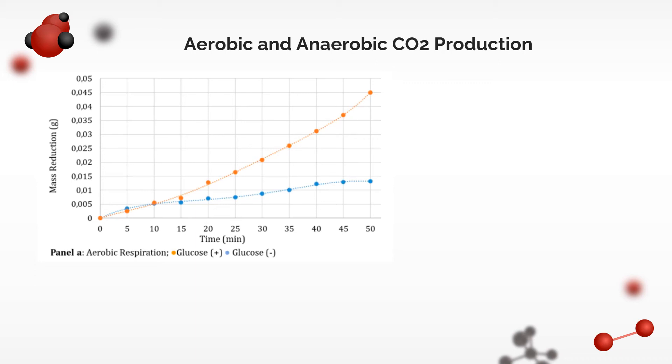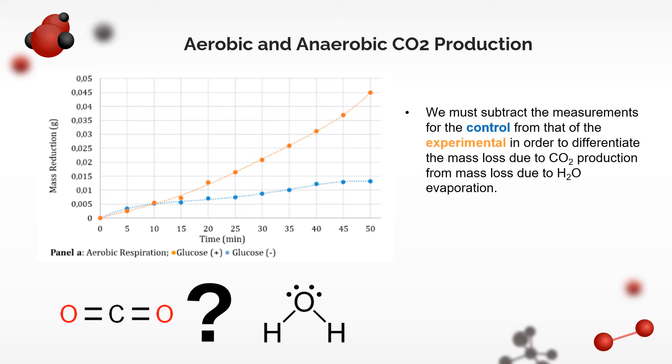First, for the aerobic setup, we are indeed seeing a reduction in mass. And the reduction in mass is because the mass is lost as CO2, and water vapor and other gases. So, to differentiate the mass loss due to CO2 and due to H2O and others, we subtract the measurements of the control with no glucose, shown in blue, from that of experimental with glucose, shown in orange. We get the number of moles of CO2 released by dividing the differences by 44.01 grams per mole, the molar mass of carbon dioxide.